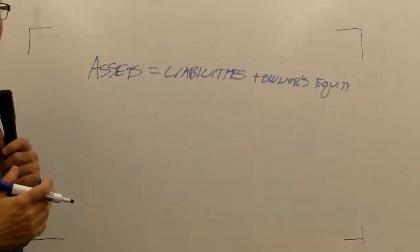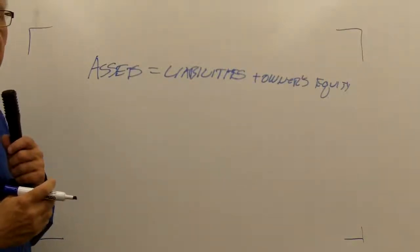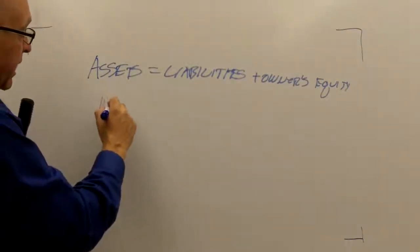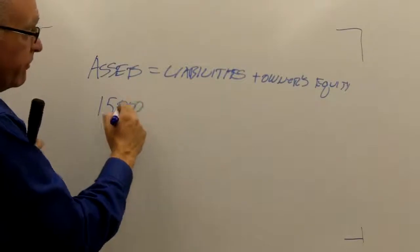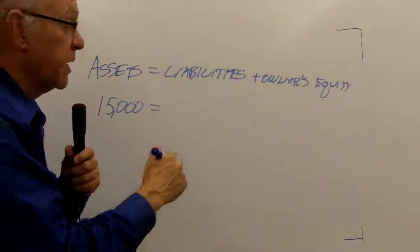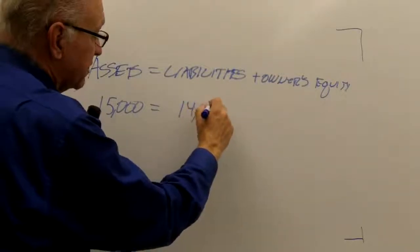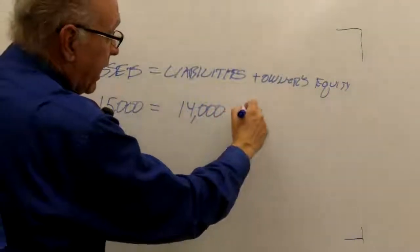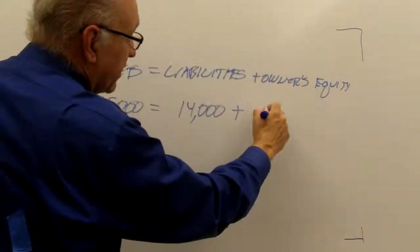I can show in my formula, for instance based on the previous example, that I have a $15,000 asset, a car. The bank, where I got my loan, has a $14,000 claim against me, and my owner's equity is $1,000.